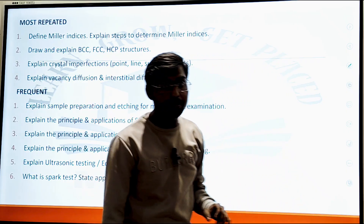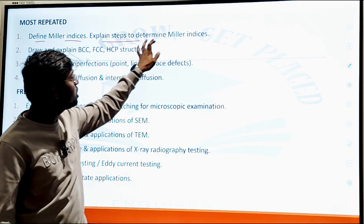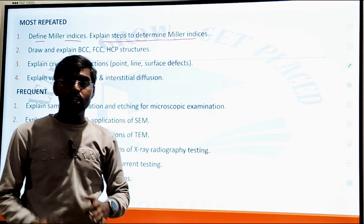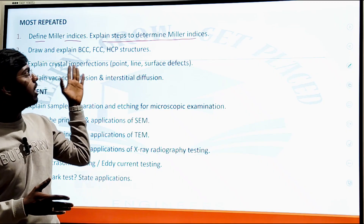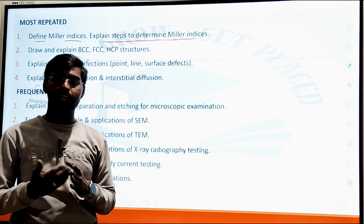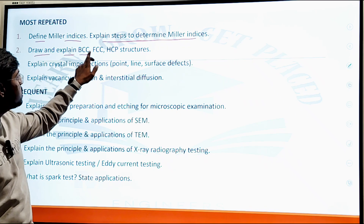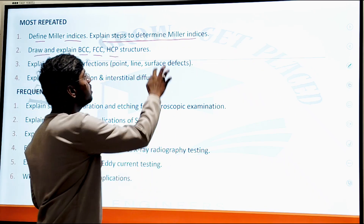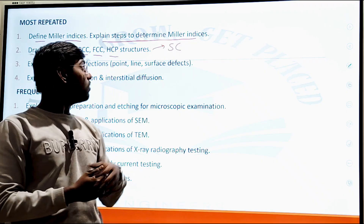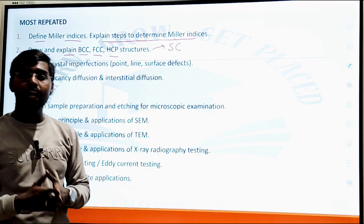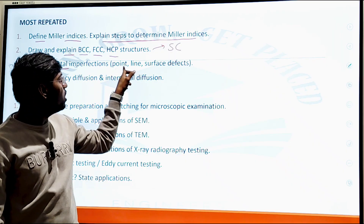After SEM and TEM, the last topics are flow lines and spark test. For exam question types in this unit: first, define Miller Indices and explain the steps to determine them, then solve the Miller Indices problem step by step. A numerical is asked based on that. Also asked: draw and explain BCC, FCC, HCP, and SC — the four types of material crystal structures — followed by derivations.